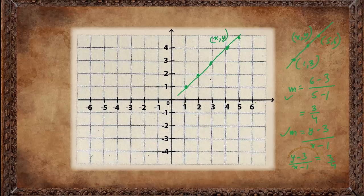There is another way of finding the equation of a line. If we know the y-intercept — the point where the line cuts the y-axis — and if we know the gradient m, then we can simply write the equation of the line as y equals to mx plus c, where c is where it cuts the y-axis.